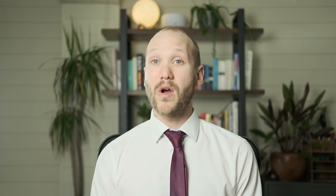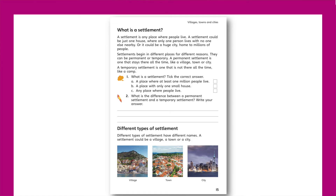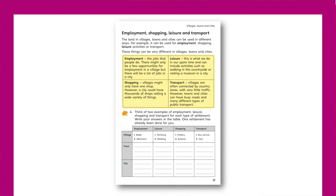Lesson three asks, how do human settlements differ? Pupils here will consider the key criteria and differences between villages, towns and cities. The employment opportunities, transport links and leisure opportunities can be compared, with the pros and cons of each type of settlement considered.